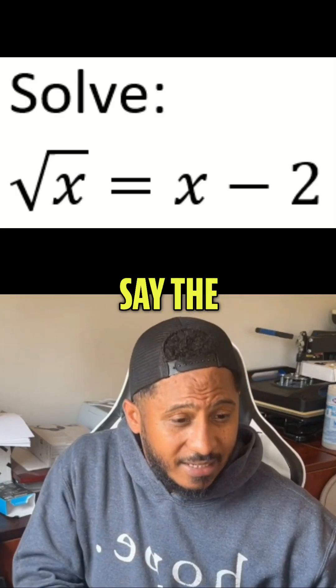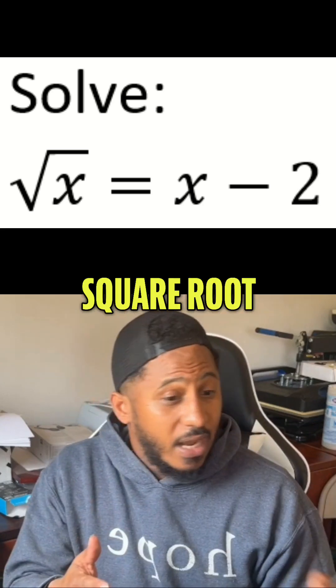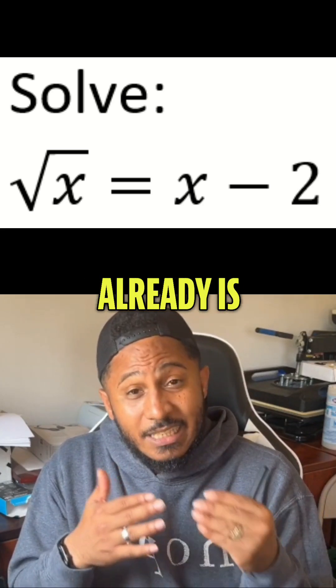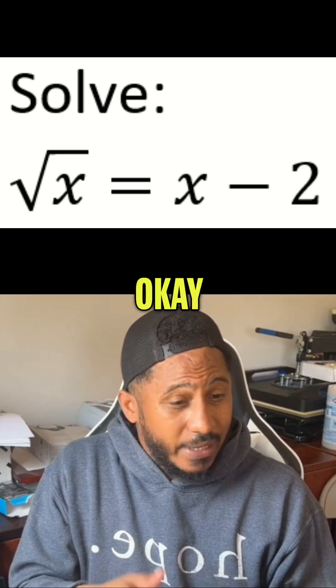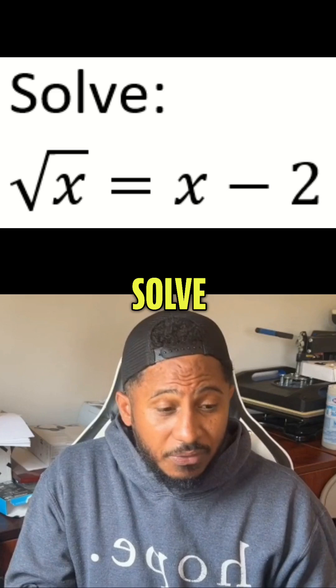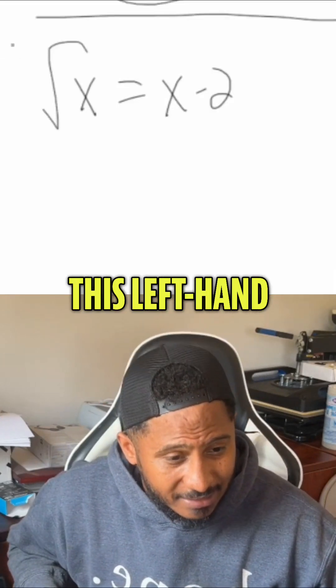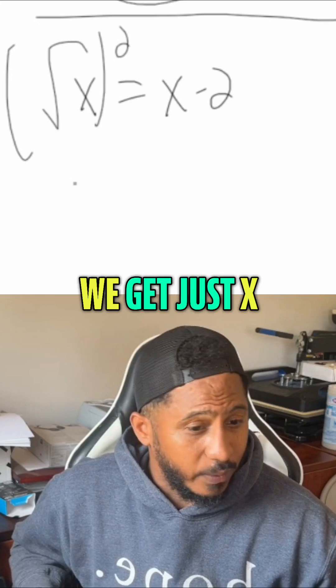But now if I need to solve the equation like this, say the square root of x equals x minus two. This square root is already there, meaning it's an implied positive square root. It does not have a negative sign in front. How we solve this is by squaring both sides of this equation. Squaring this left-hand side gets rid of the square root, we get just x.